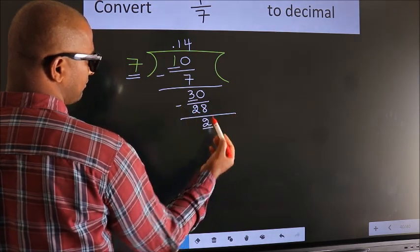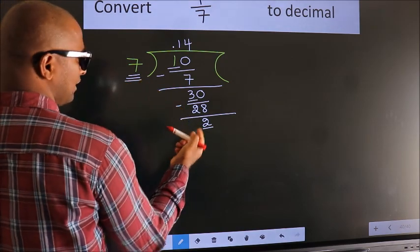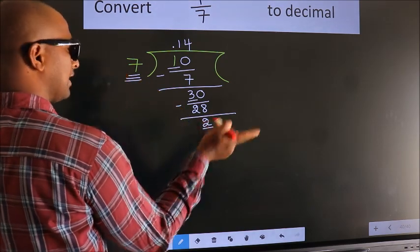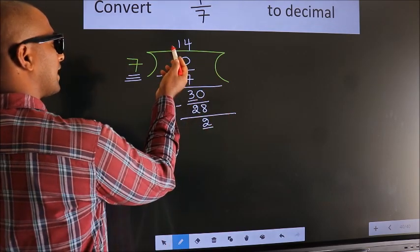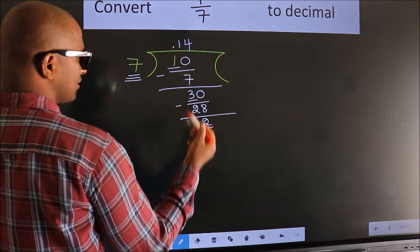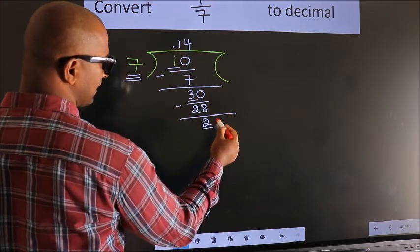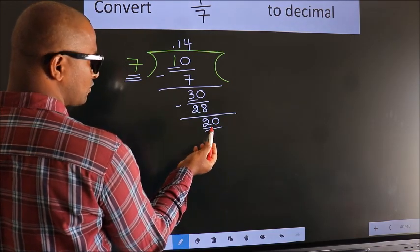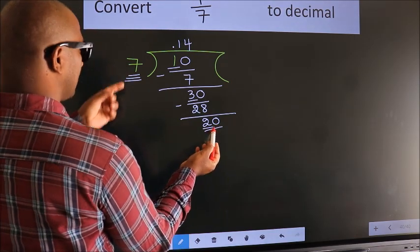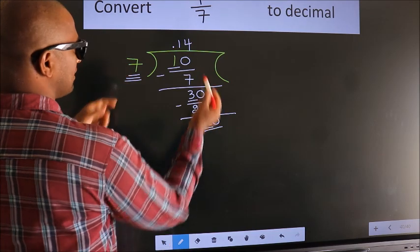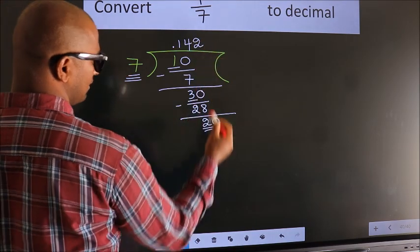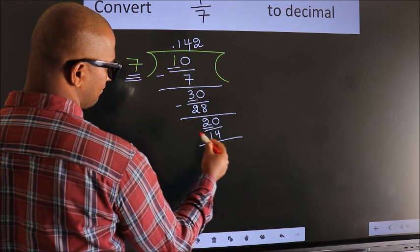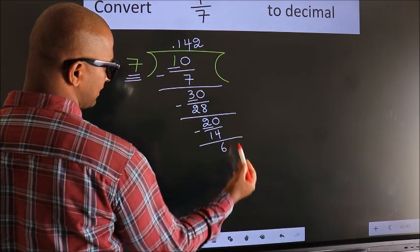Here we have 2, here 7. 2 is smaller than 7. And we already have the decimal, so we can directly take 0. So, 20. A number close to 20 in the 7 table is 7 twos, 14. Now, we subtract. We get 6.